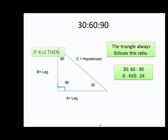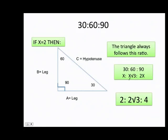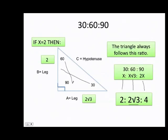They tell me that the value of x equals 2. I can go ahead and follow the ratio. For 30 degrees it's going to be 2, because that's the value of x. For 60 degrees it's going to be 2 times the square root of 3. And for 90 degrees it's going to be 2 times 2, which is 4. So when x equals 2, the sides are 2, 2√3, and 4.